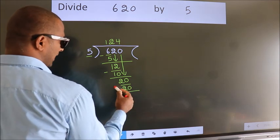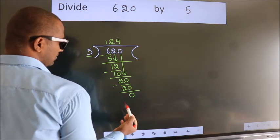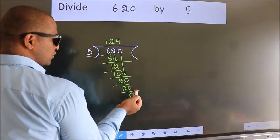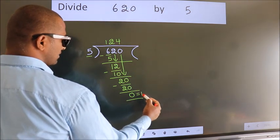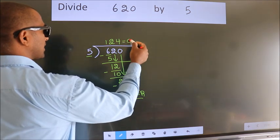Now we subtract. We get 0. No more numbers to bring it down. So we stop here. This is our remainder. This is our quotient.